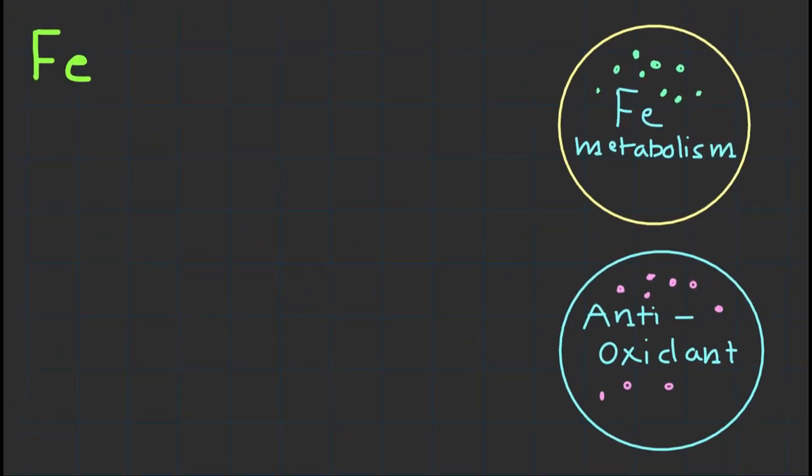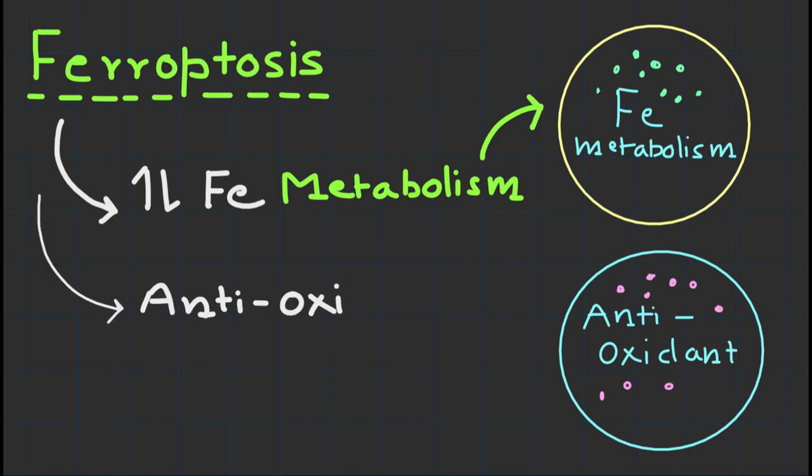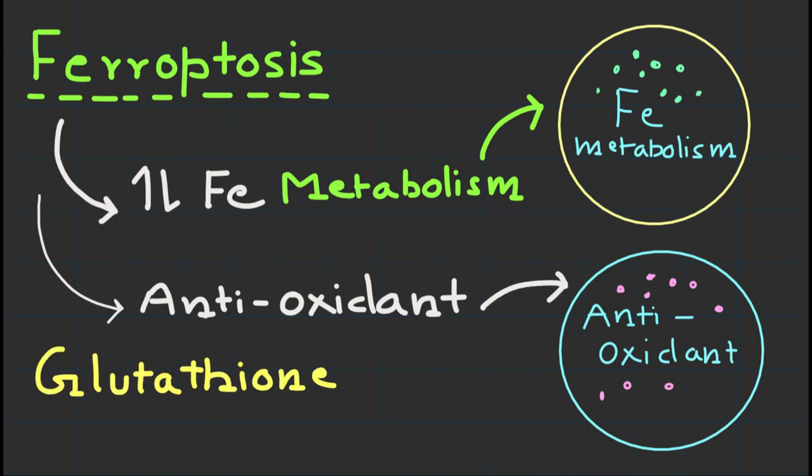Ferroptosis involves the dysregulation of cellular iron metabolism and antioxidant defense systems. The complex interplay of several key players organize this process. One of the central regulators is the enzyme called glutathione peroxidase 4, in short GPX4, which helps eliminate lipid peroxides and maintain cellular redox balance.